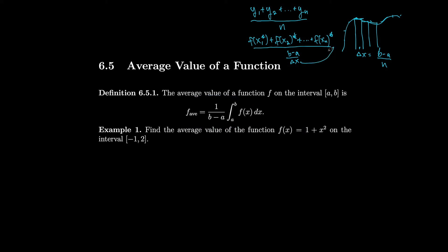Notice the delta x jumps out and becomes the dx. All of these little f values that we add up become f of x, and the b minus a we divide by is 1 over b minus a. So when we take the limit as n goes to infinity, our approximation for the average actually becomes exactly equal to the average. This gives us the average value of the function.